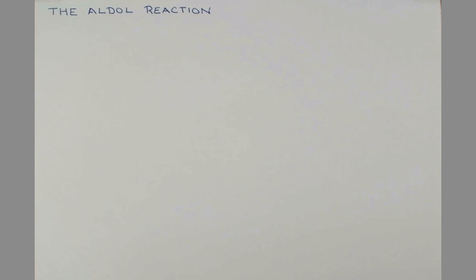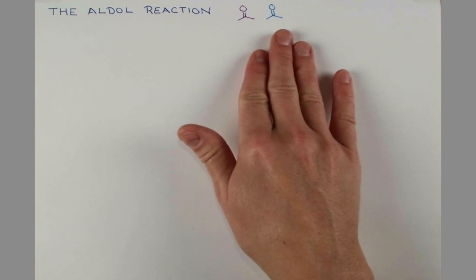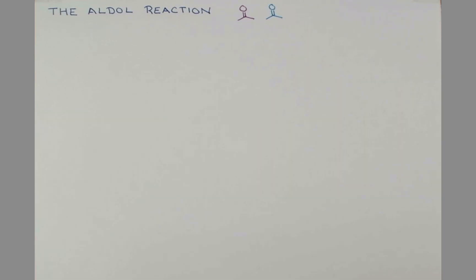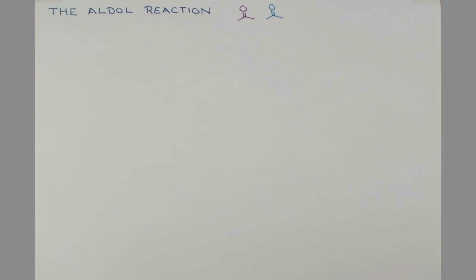Let's begin by looking at the aldol reaction of acetone with itself. So we have our two molecules of acetone here. I'm coloring them differently so I can show you in the product where the carbon atoms end up. We can treat our solution of acetone with either base or acid.